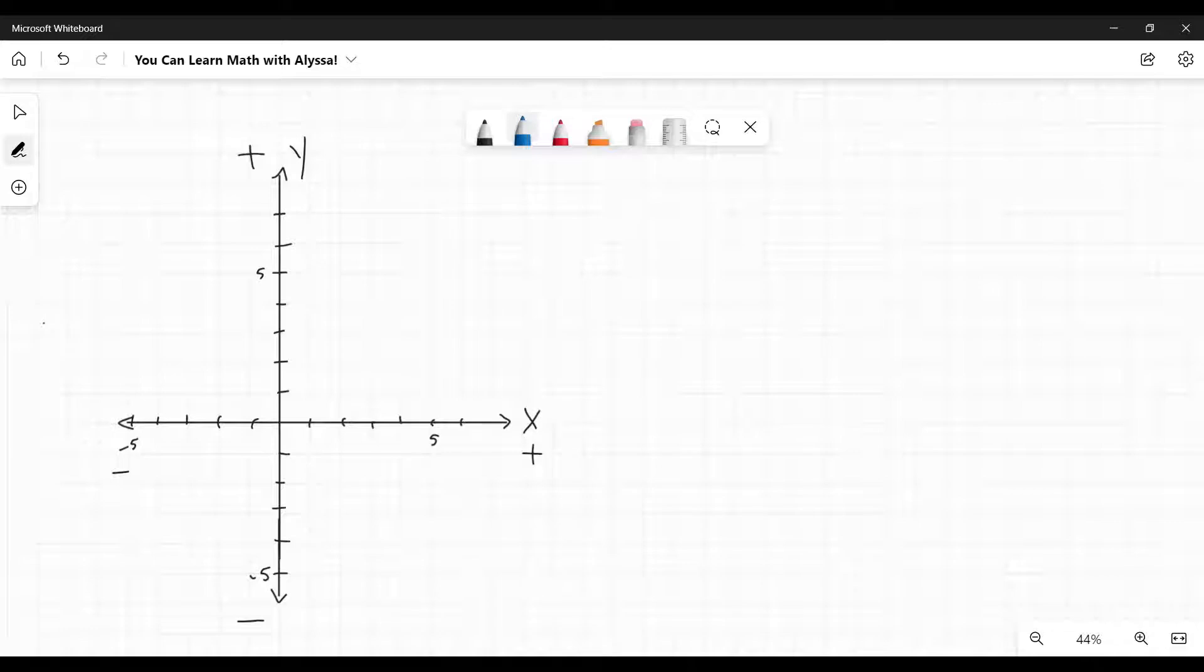First off, we have our x-y graph. Get used to this. You are going to see a lot of it if you haven't already in algebra. This is the x-axis down here, and this is our y-axis. Positive x is here, negative x is there. Positive y is up this way, negative y is down here.